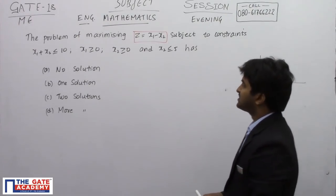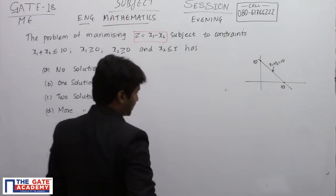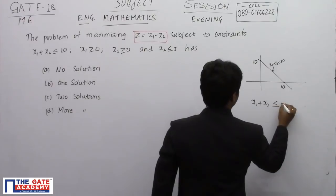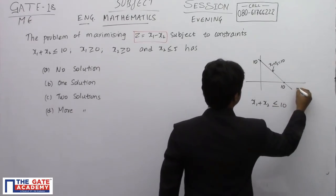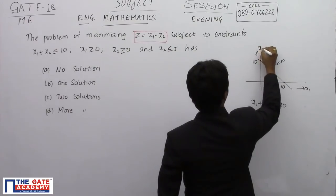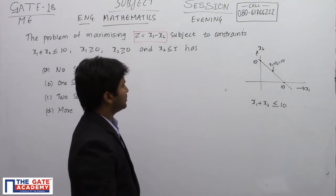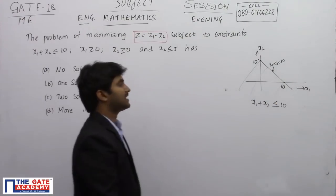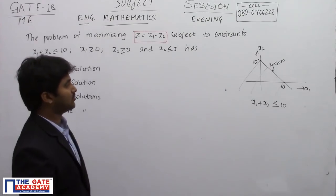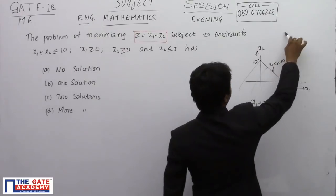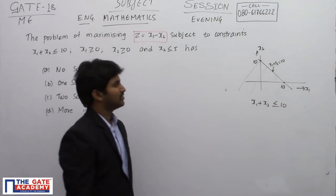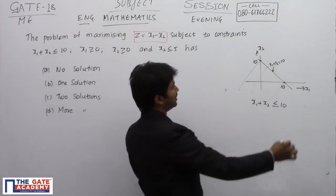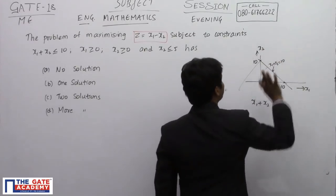First, x1 plus x2 is less than or equal to 10. If we consider this axis as x1 and this as x2, the region where x1 plus x2 is less than or equal to 10 is this shaded area. On the line itself, x1 plus x2 equals 10; below this line it is less than 10, and above this line it is greater than 10.